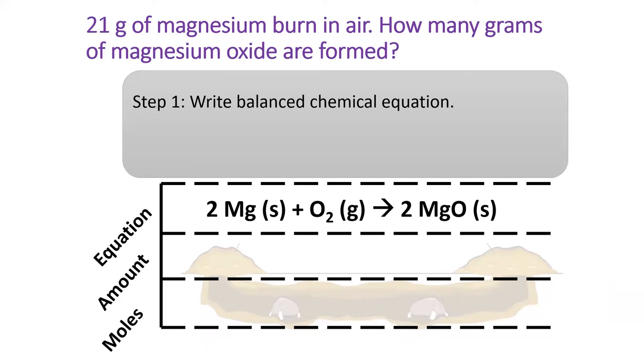The top line is always reserved for the balanced chemical equation. The phrase magnesium burns means magnesium combines with oxygen. Remember, oxygen is a Brinkelhoff diatomic. You will also need to know the correct formula for magnesium oxide, which is MgO. In order for this equation to be balanced, both magnesium and magnesium oxide need a 2 in front of them.